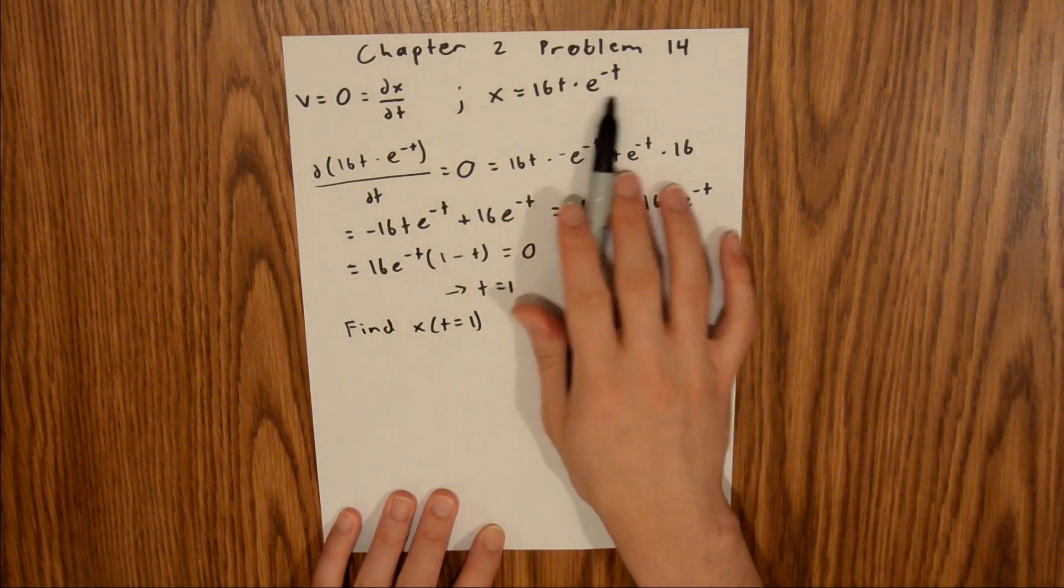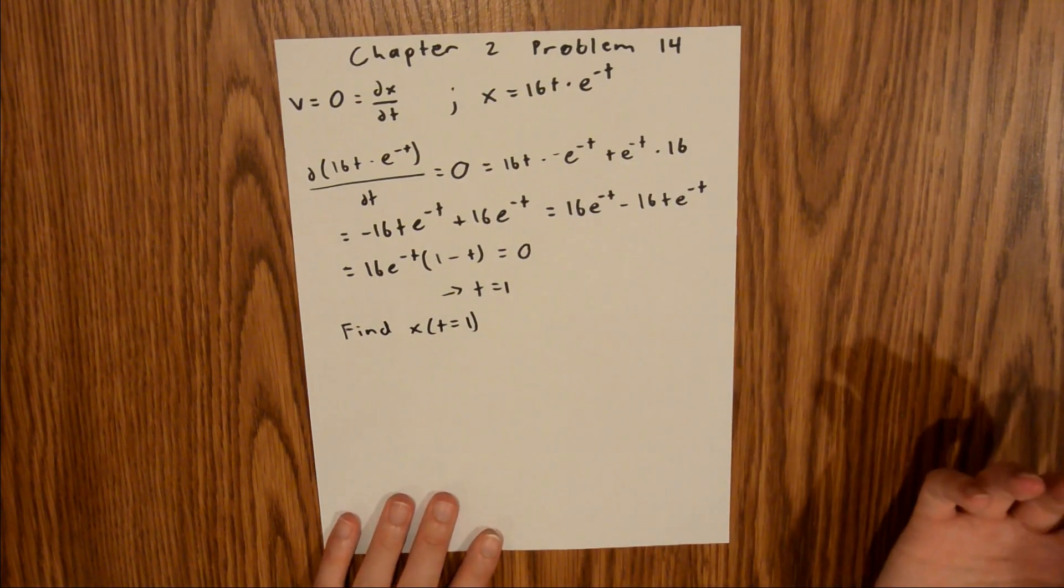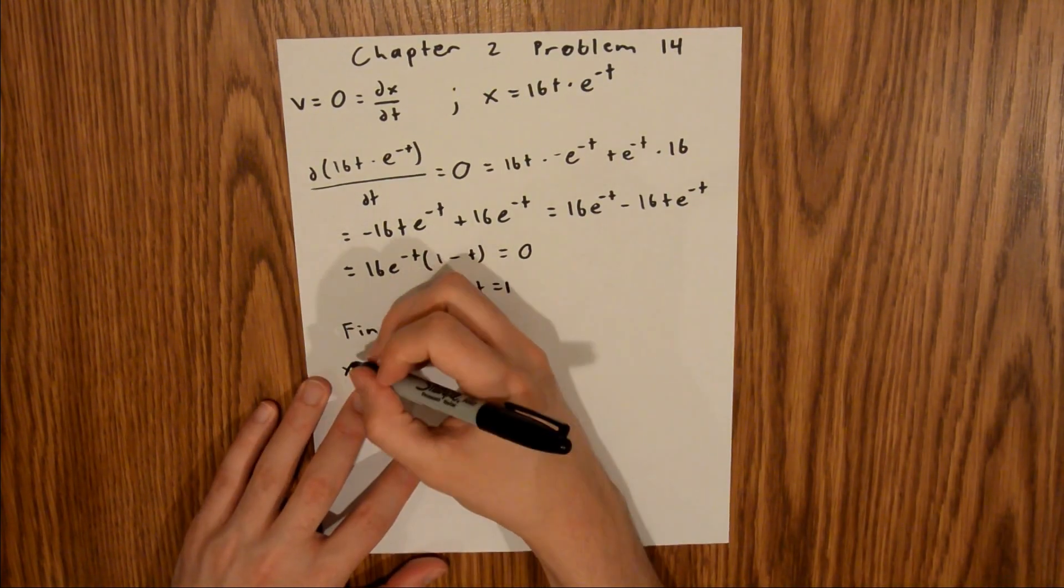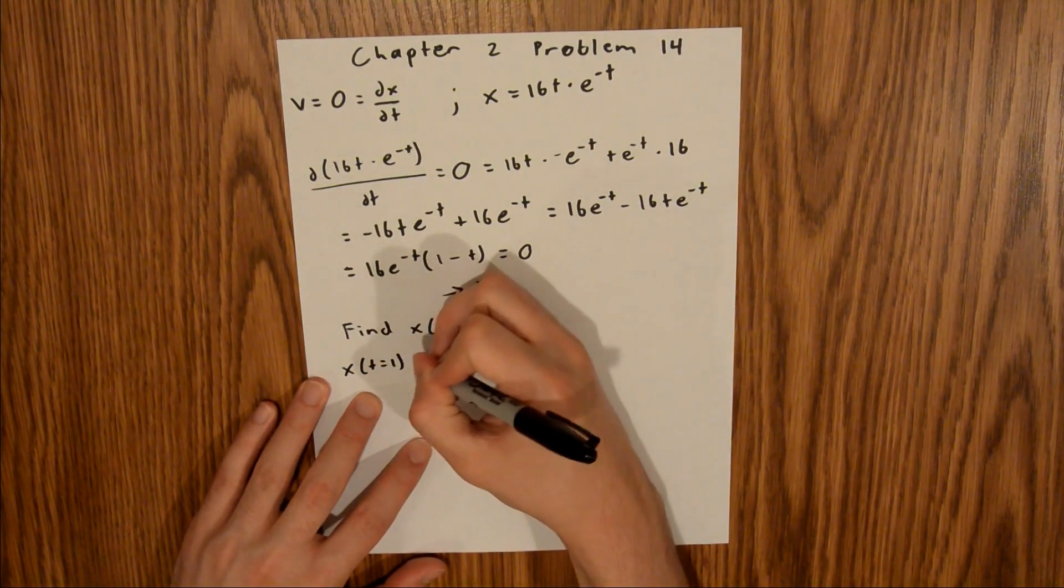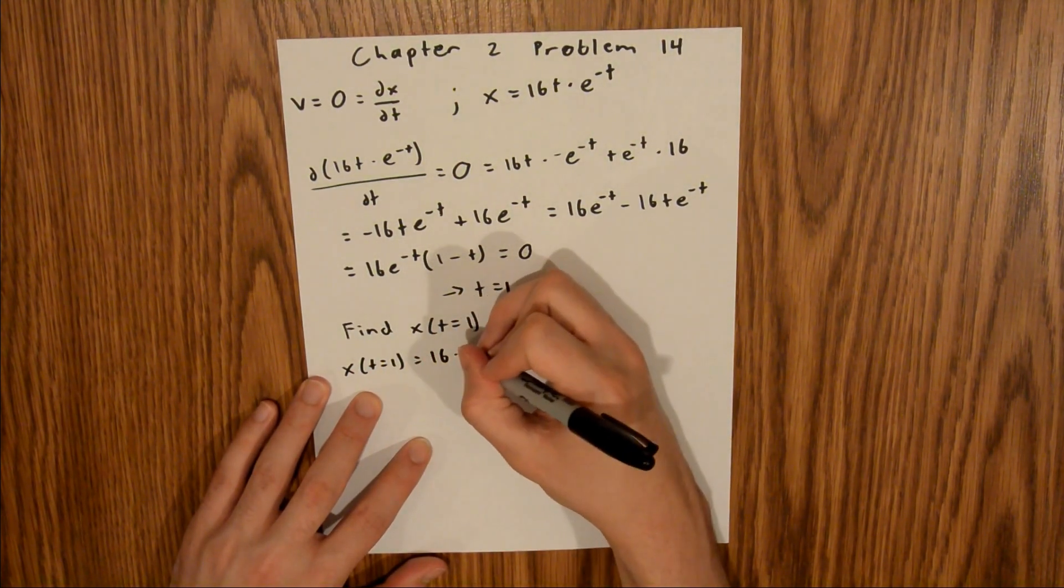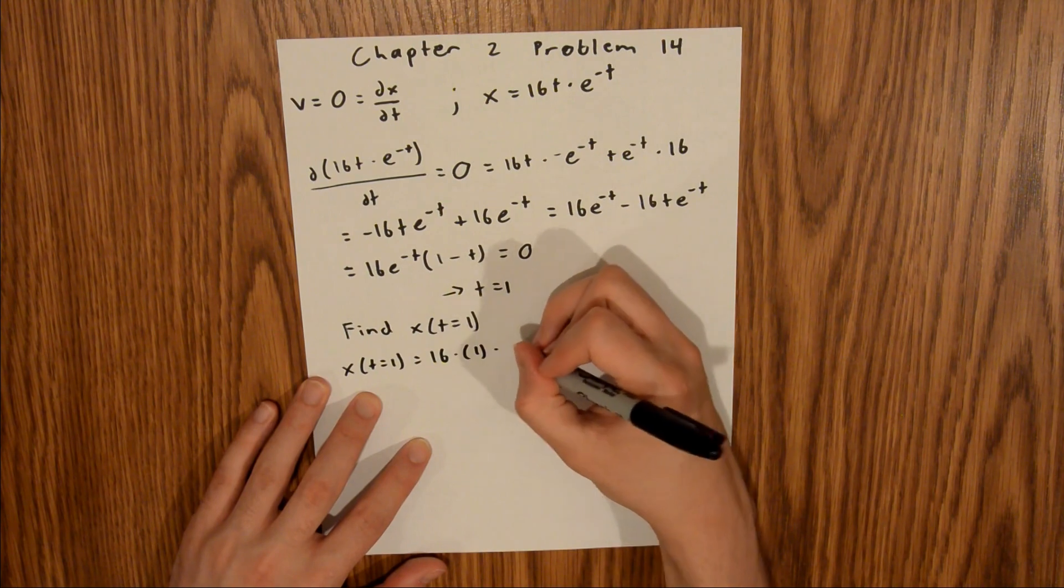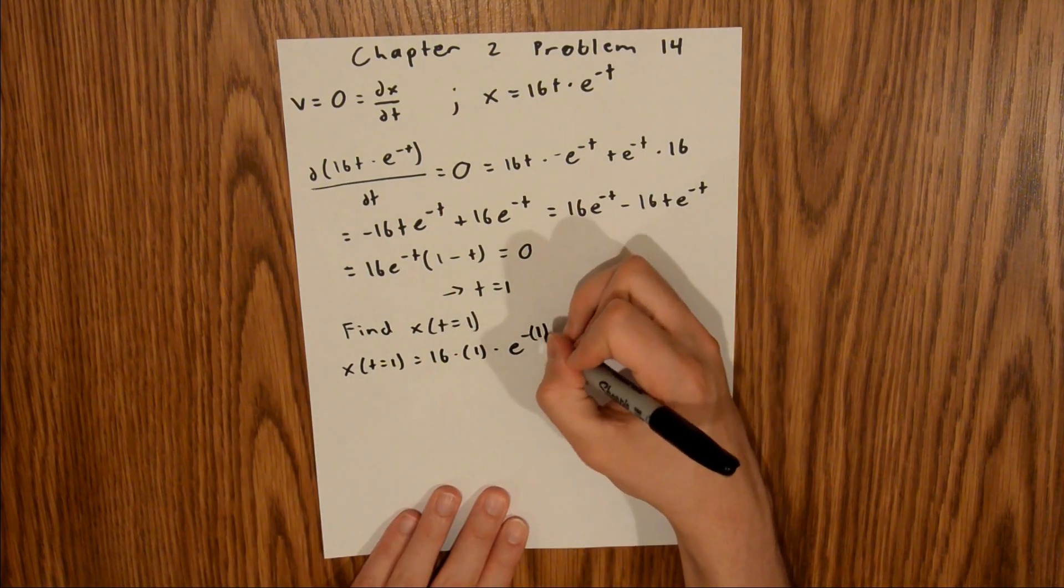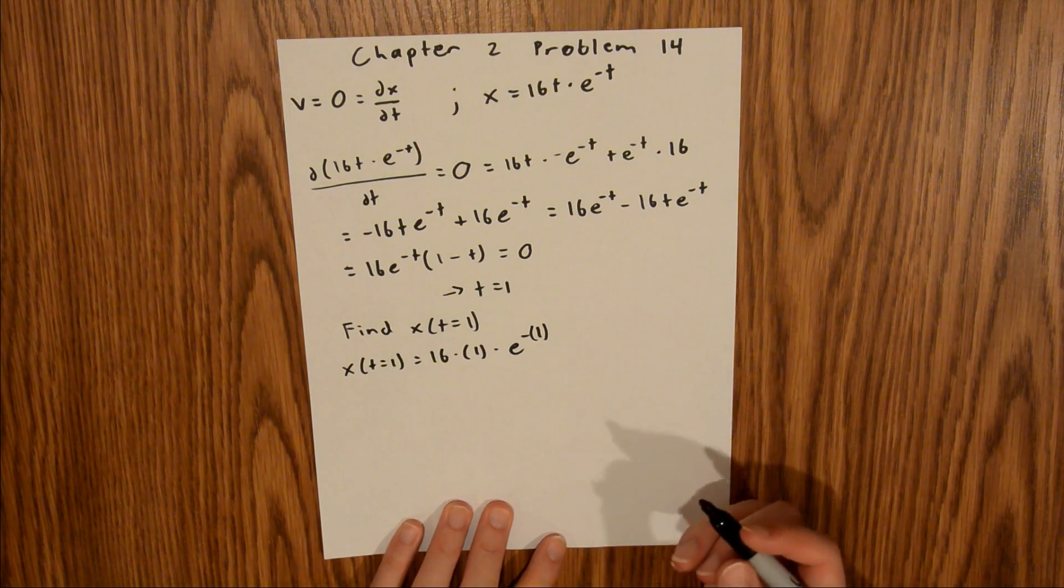What we can do is use our position equation and plug in t equals 1. So x at t equals 1 is equal to 16 times 1 times e to the negative 1. And if you plug that into your calculator, you'll find that x at t equals 1 is equal to 5.9 meters.